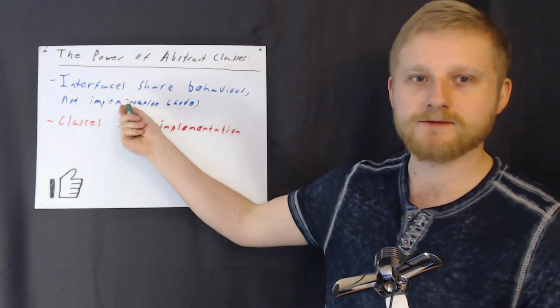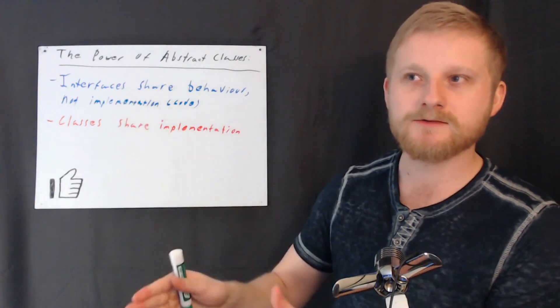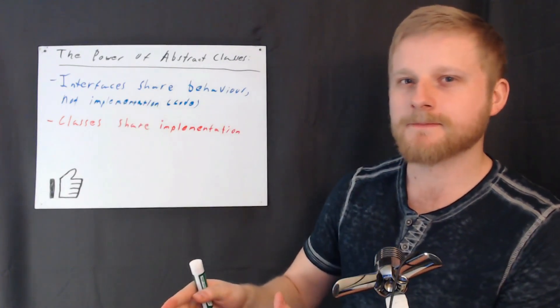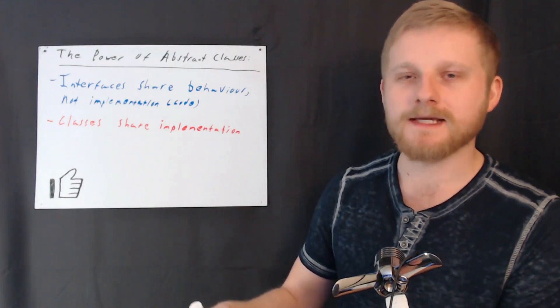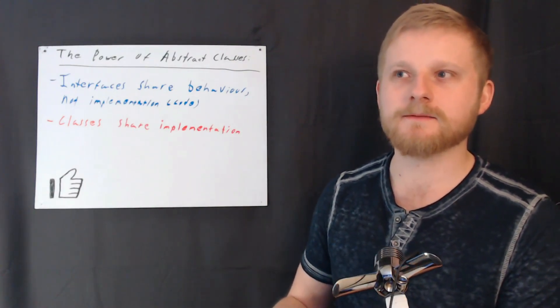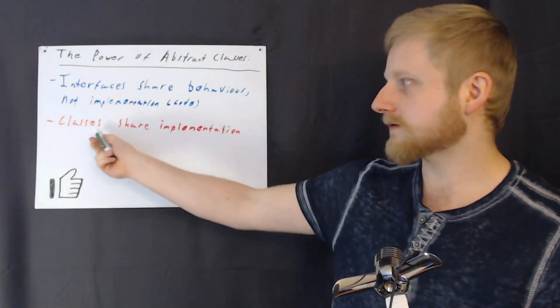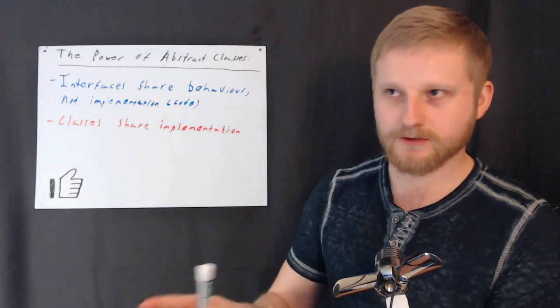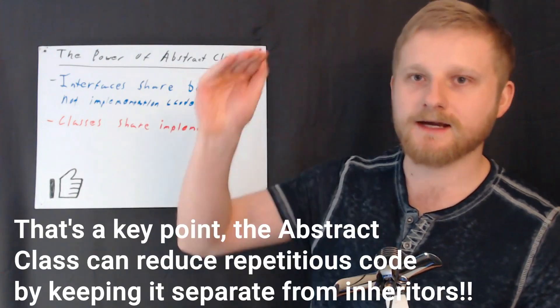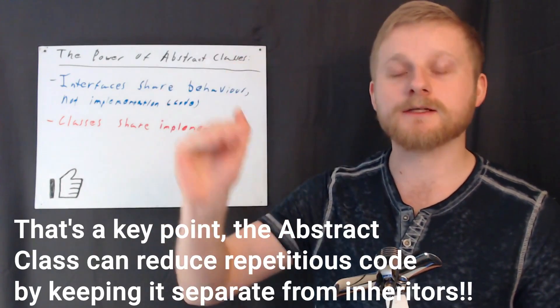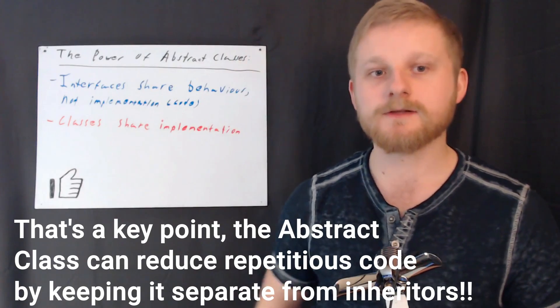So those are two of the main points, they're different approaches to solve different problems. In one case, you want something to be present but implemented differently. You expect a certain behavior, but you don't care how that behavior executes. And then in the other case, we are actually concerned about literally sharing code between a set of objects, so that we don't have to have that repetitious code in every object that inherits from the class.